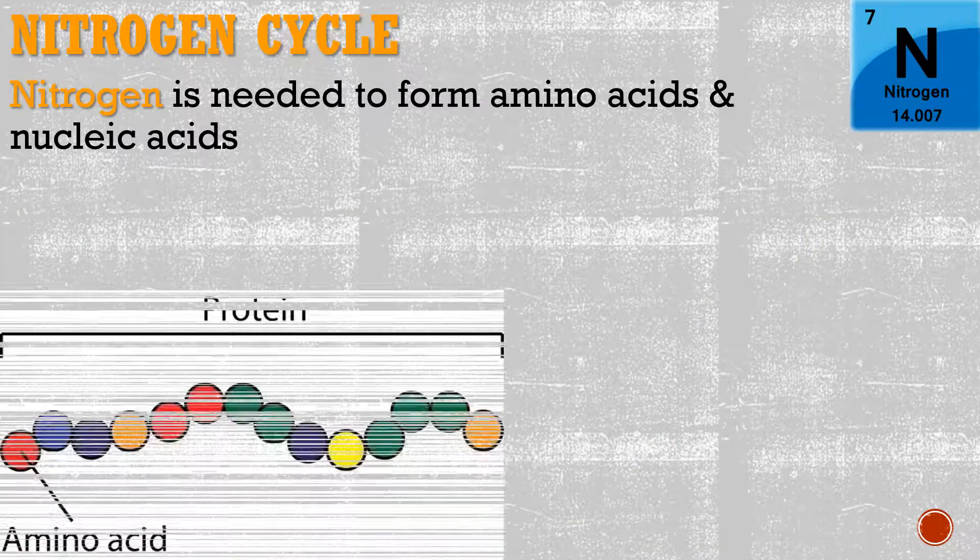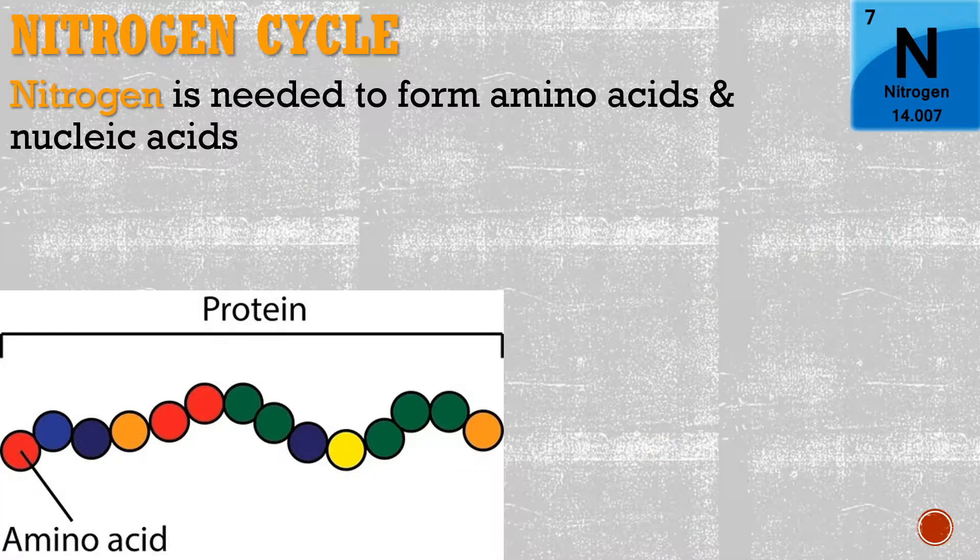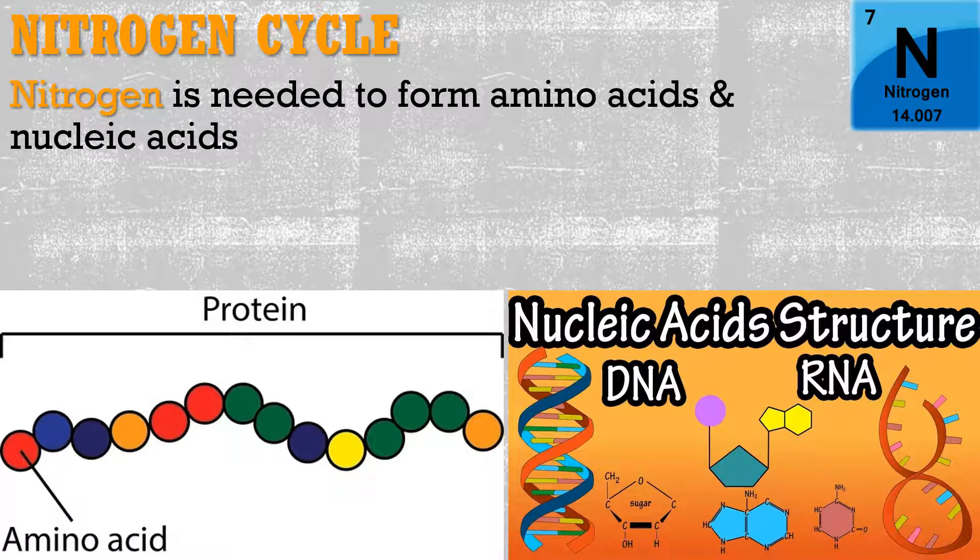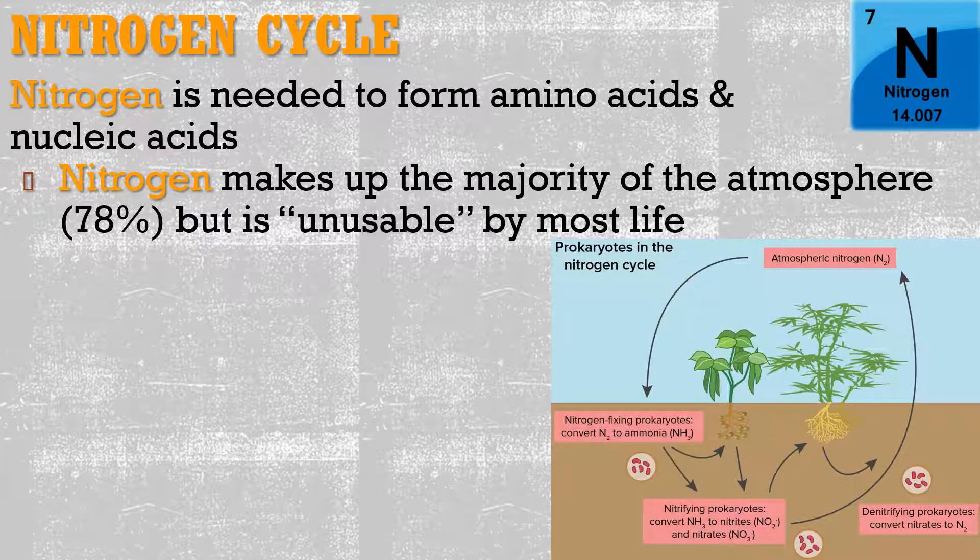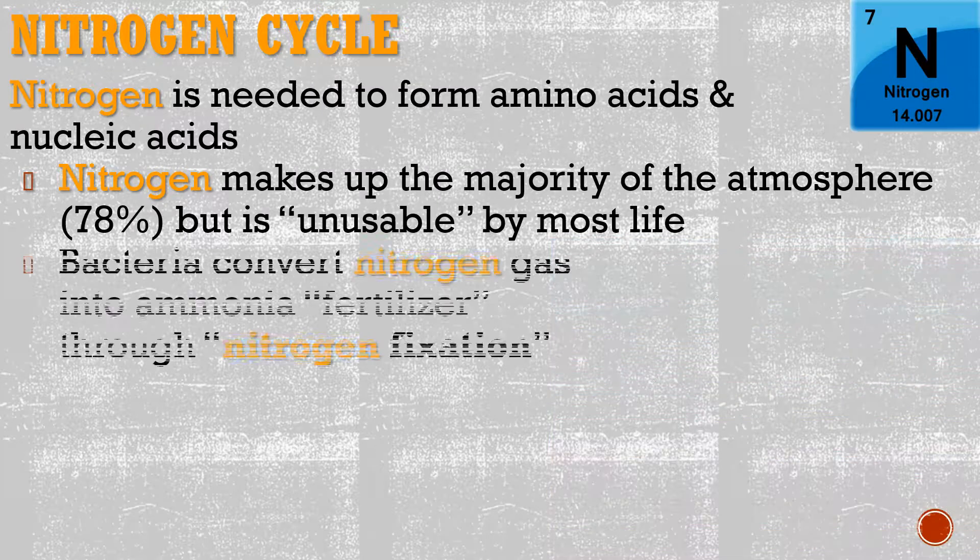Nitrogen is a little bit different. We need this to form our amino acids and nucleic acids. So with the proteins and your DNA and RNA, both of those are going to need nitrogen. However, the problem is, nitrogen is the majority of the atmosphere. Three out of every four molecules you're breathing in right now are nitrogen. However, you can't actually use that nitrogen. It's unusable by most life.